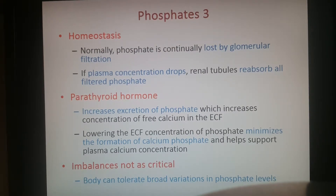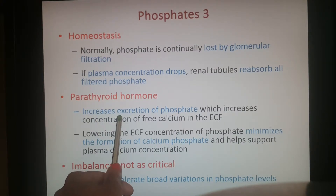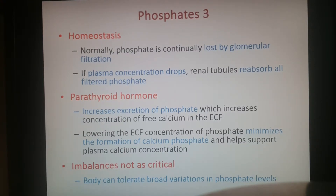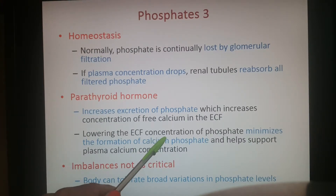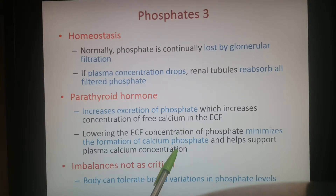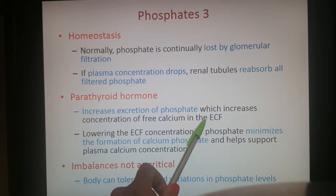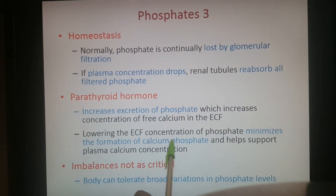Parathyroid hormone helps regulate phosphate levels by increasing the excretion of phosphate — more phosphate loss through urine. It also increases the concentration of free calcium in the extracellular fluid. By lowering the extracellular fluid concentration of phosphate, it minimizes calcium phosphate from forming. Calcium is kept either sequestered inside the cell in the smooth ER or pumped out into the extracellular fluid, while phosphate usually stays inside the cell.